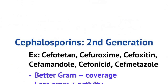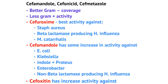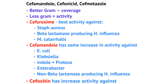Now let's focus on second generation cephalosporins. These are cefotetan, cefuroxime, cefoxitin, cefamandole, cefonicid, and cefmetazole. These agents have better gram-negative coverage than first gen agents, but they do have less gram-positive activity.